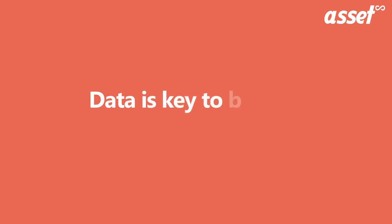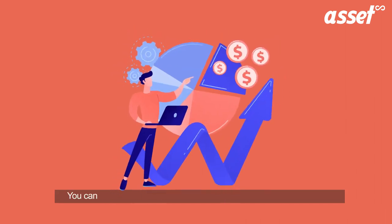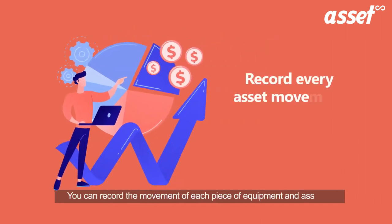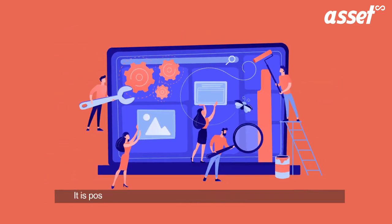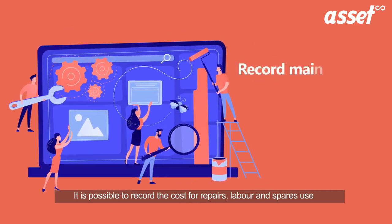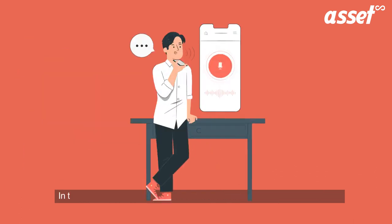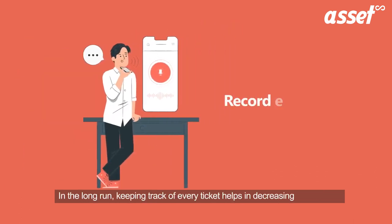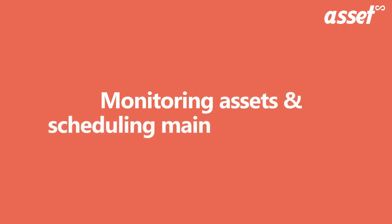Let us understand how you will be able to boost productivity and streamline operations in your hotels. You can record the movement of each piece of equipment and assets to improve the productivity of the hotel. It is possible to record the cost for repairs, labor, and spares used in each maintenance activity. In the long run, keeping track of every ticket helps in decreasing the average closing time of tickets.